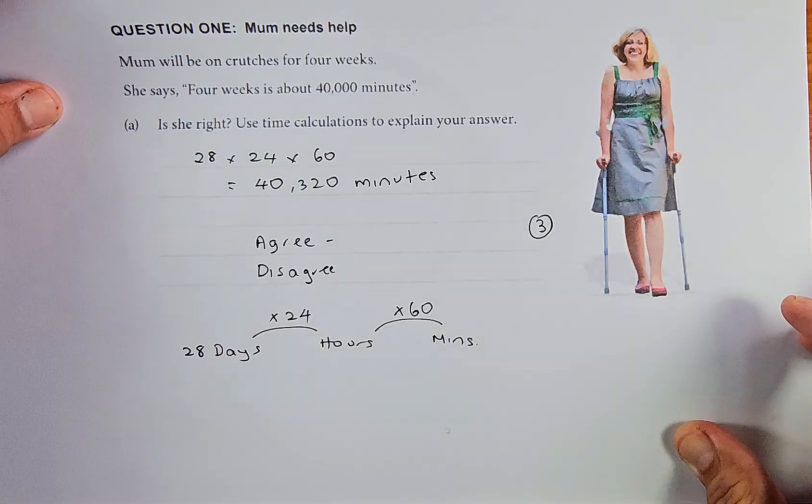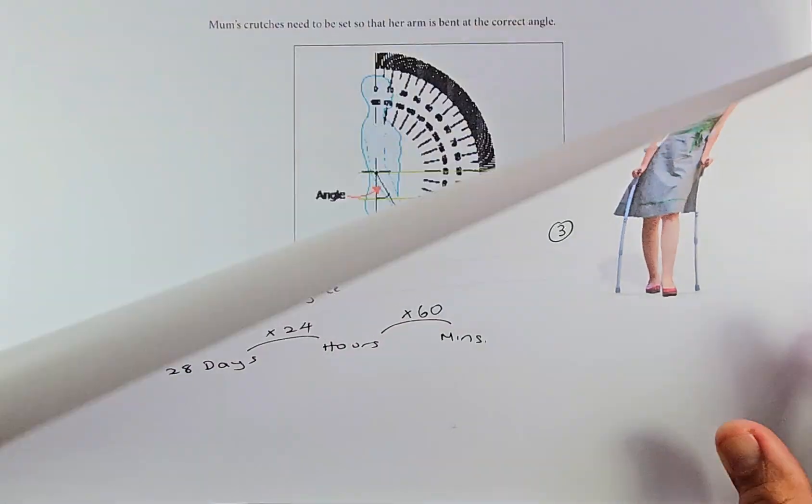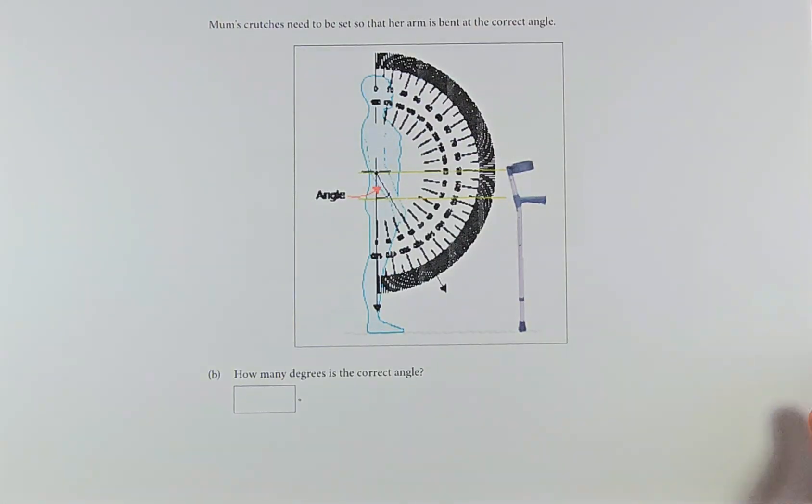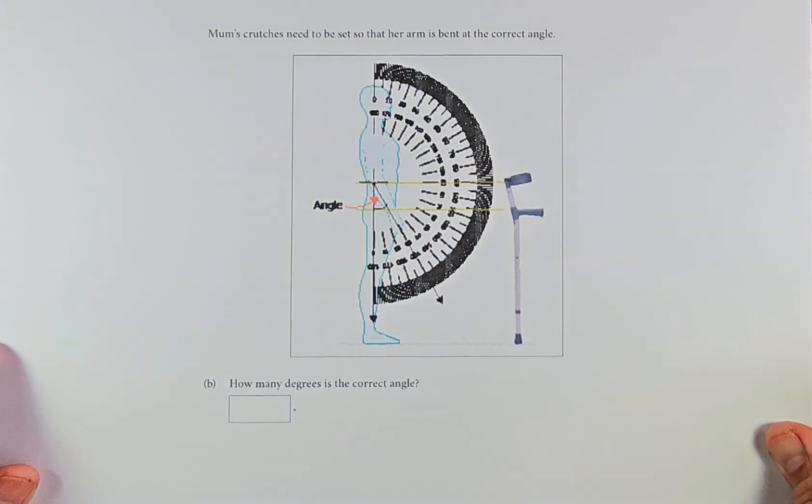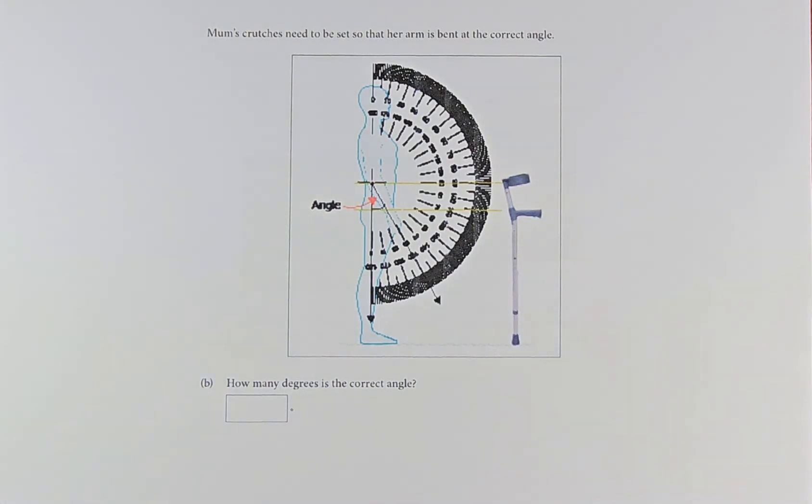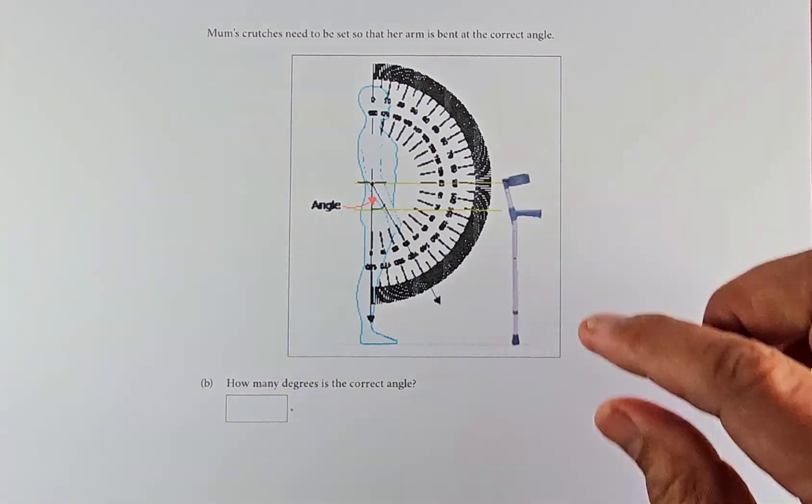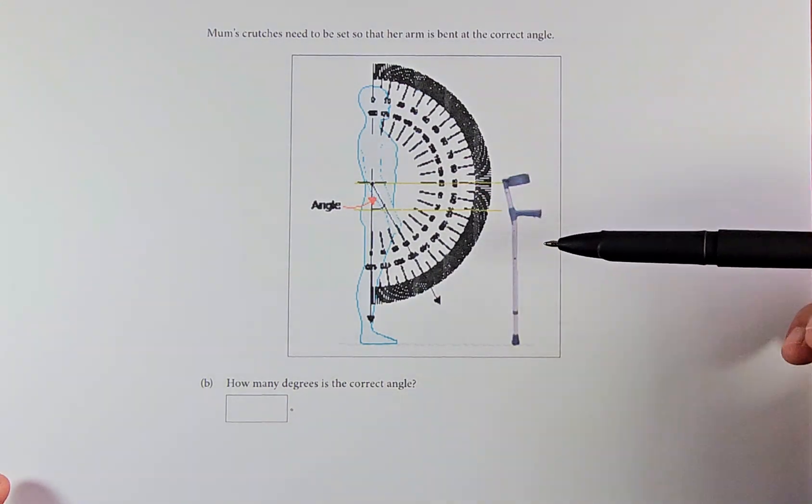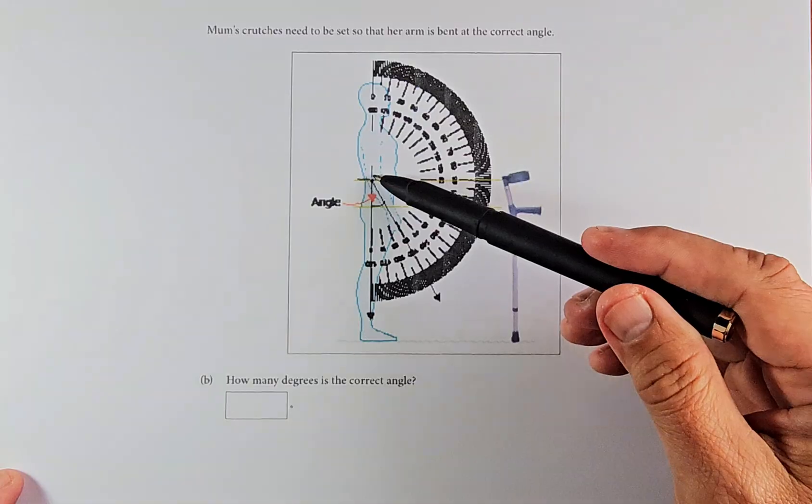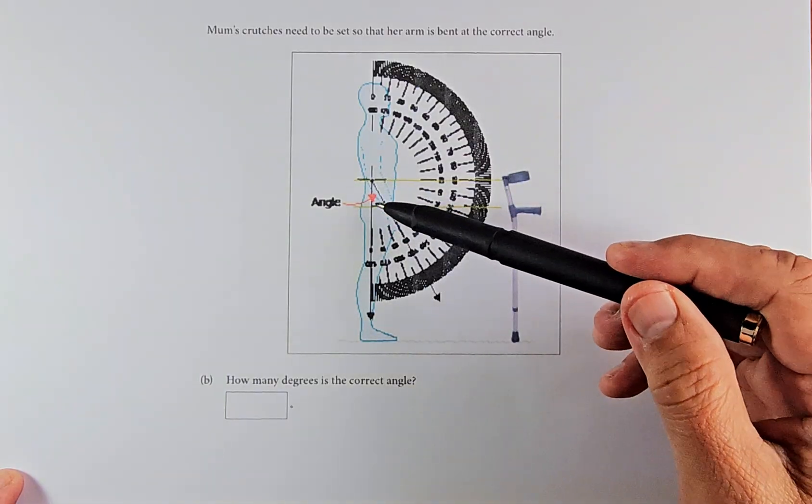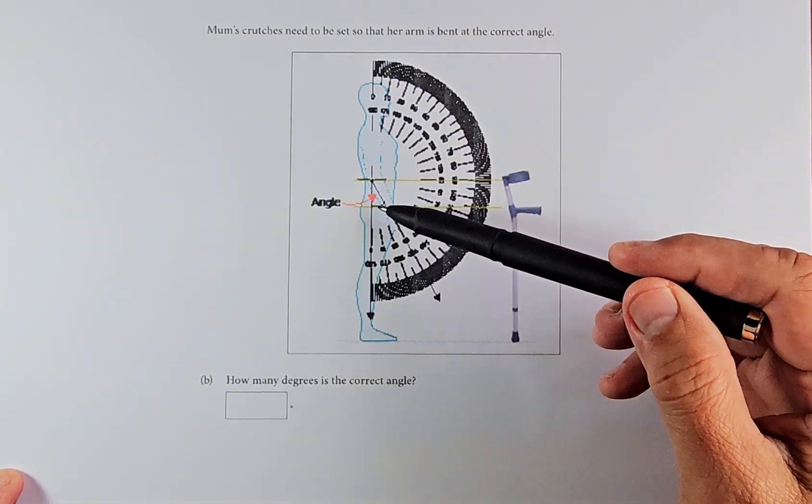Question 1b: Mom's crutches need to be set so that the arm is bent at the correct angle. It must bend at the correct angle, and you can see that angle. They tell you this graph here, and that is the angle you're looking for. If you look at it from zero, it's about 30 degrees.